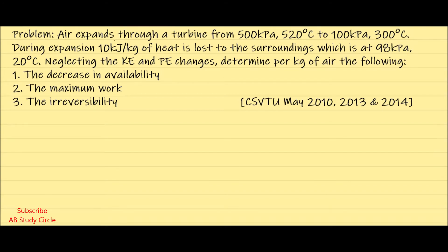In this video we are discussing a problem related to the concept of availability and irreversibility. This question has been asked in CSVTU university exam three times: first in 2010, then in 2013, and then in 2014. The problem states that air expands through a turbine from 500 kilopascal at 520 degree Celsius to 100 kilopascal at 300 degree Celsius. During expansion, 10 kilojoule per kg of heat is lost to the surrounding.